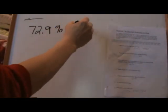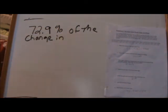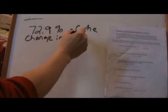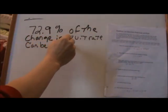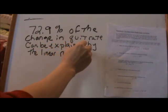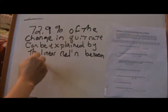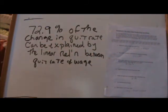72.9% of the change in our y variable—the quit rate—can be explained by the linear relationship between quit rate and wage. That's the exact interpretation you need to give me for part c. 72.9% of the change in quit rate can be explained by the linear relationship between quit rate and wage. That's the interpretation, but now let's talk about it and make sure we understand what that means.